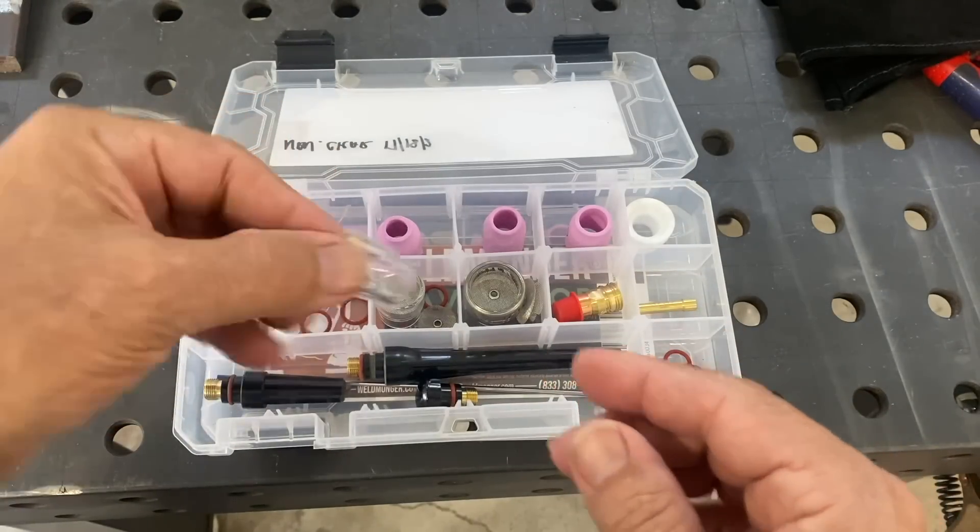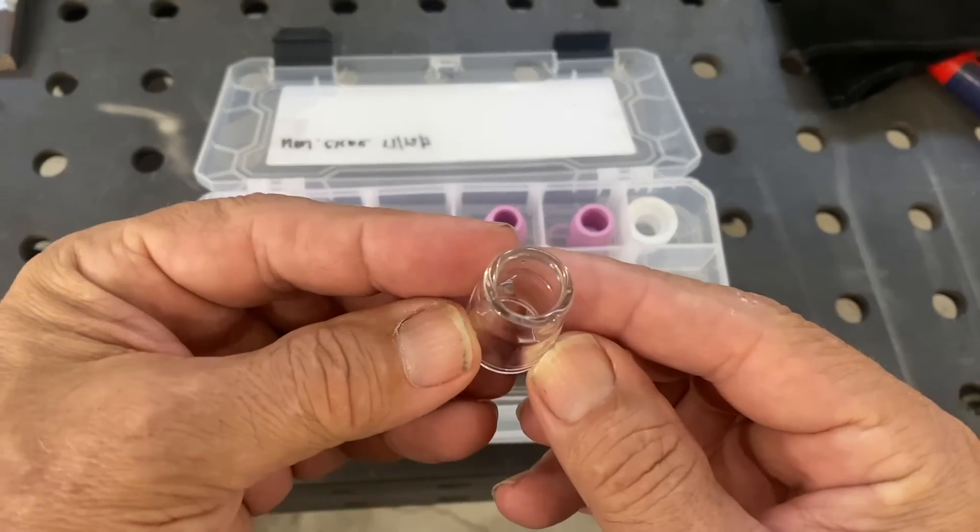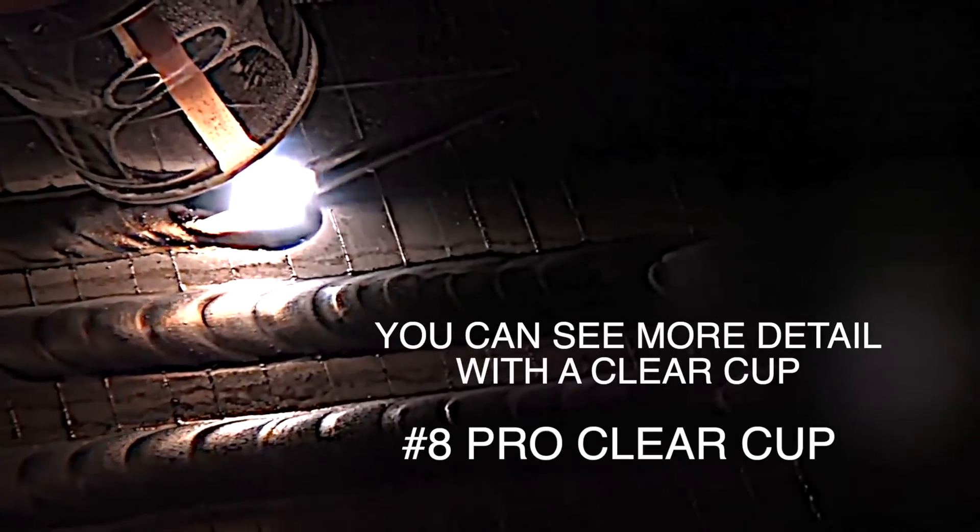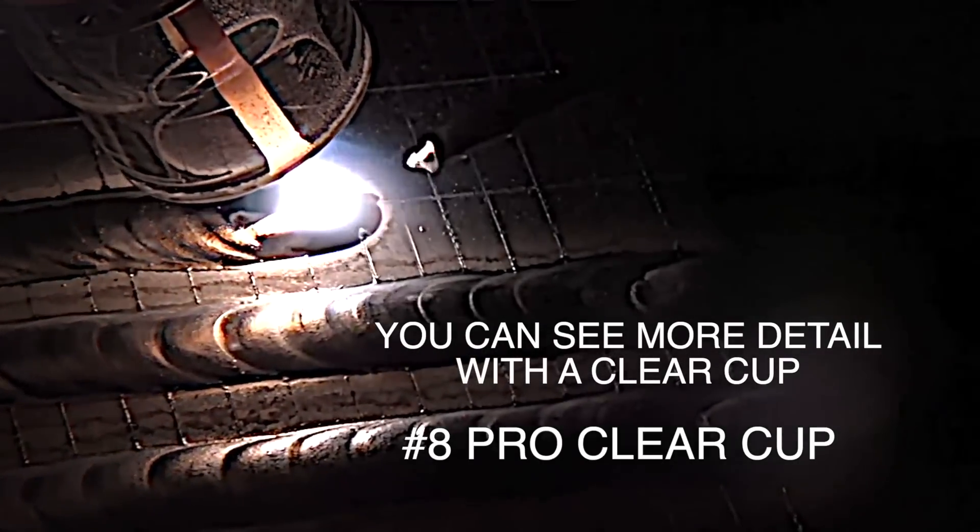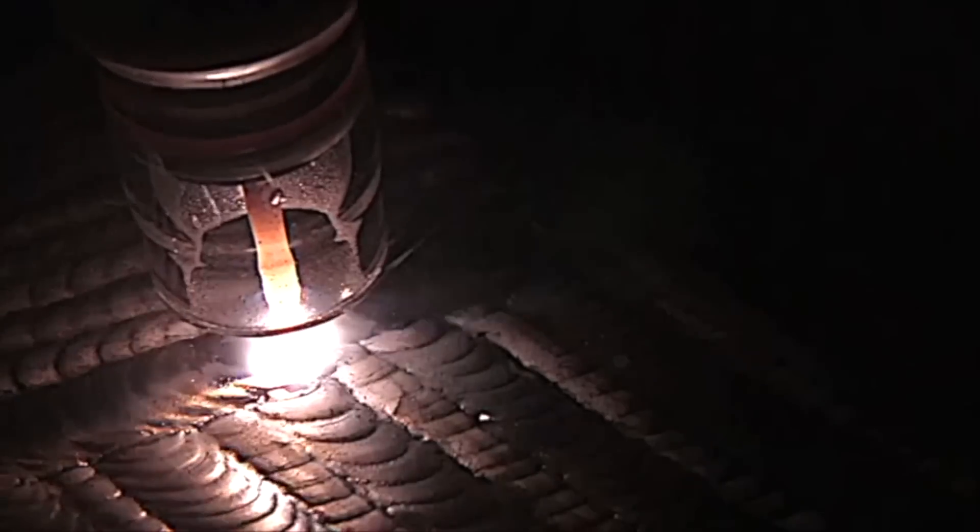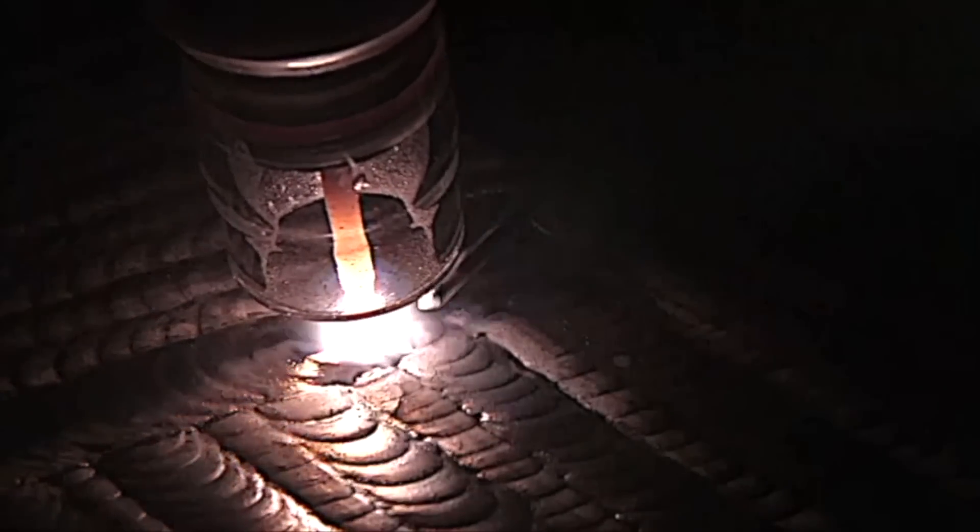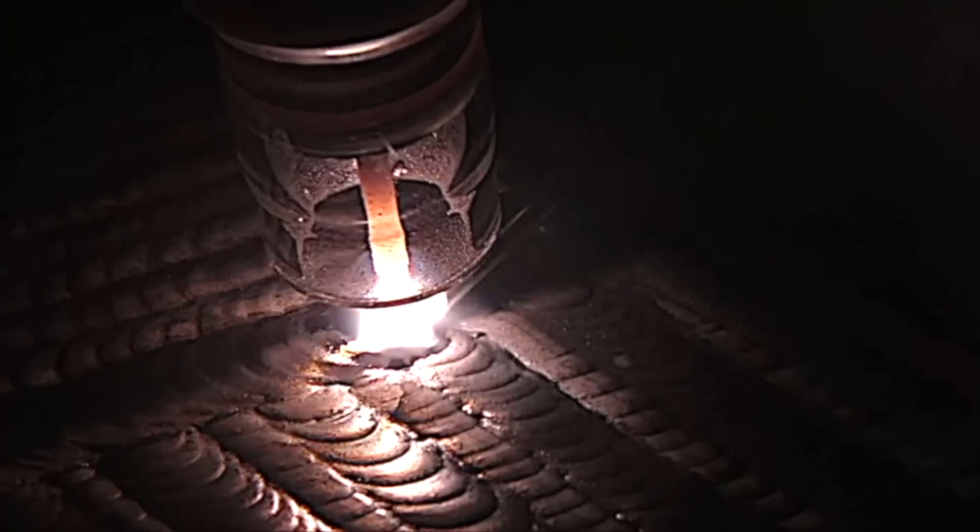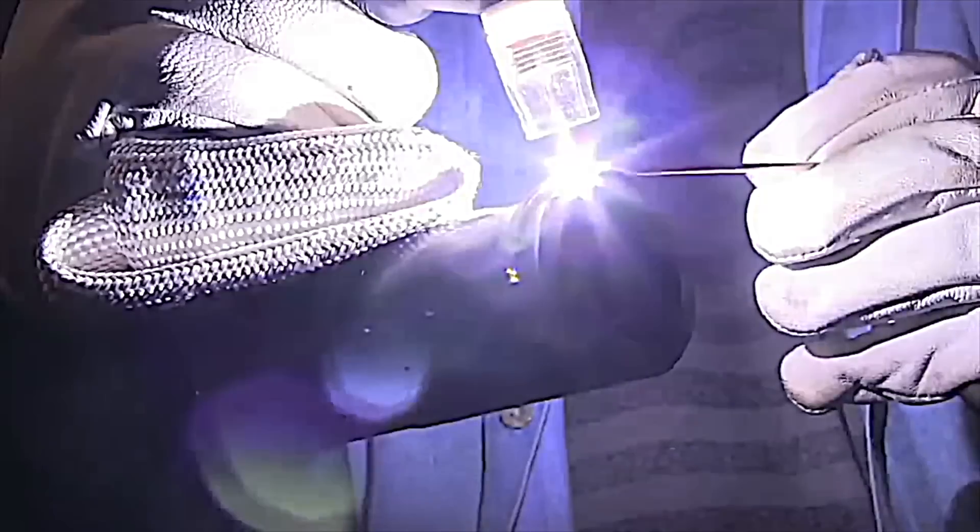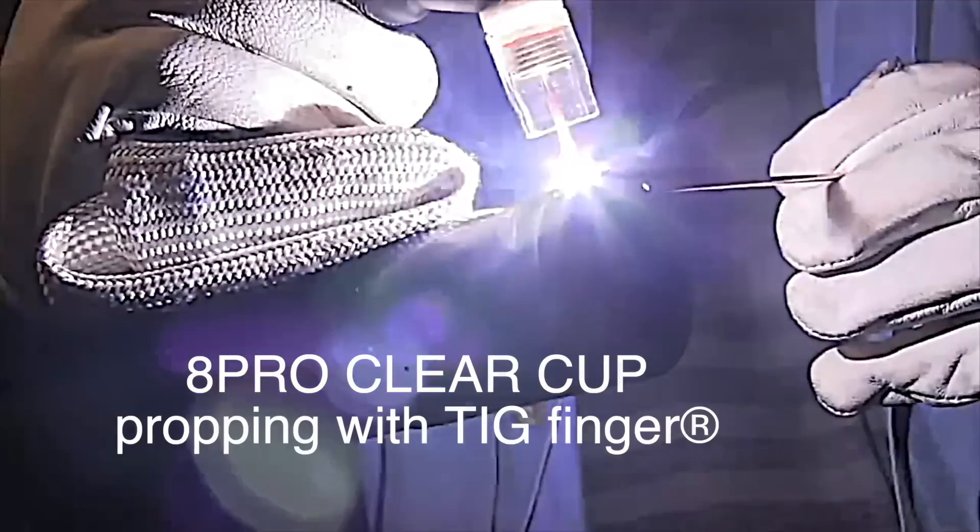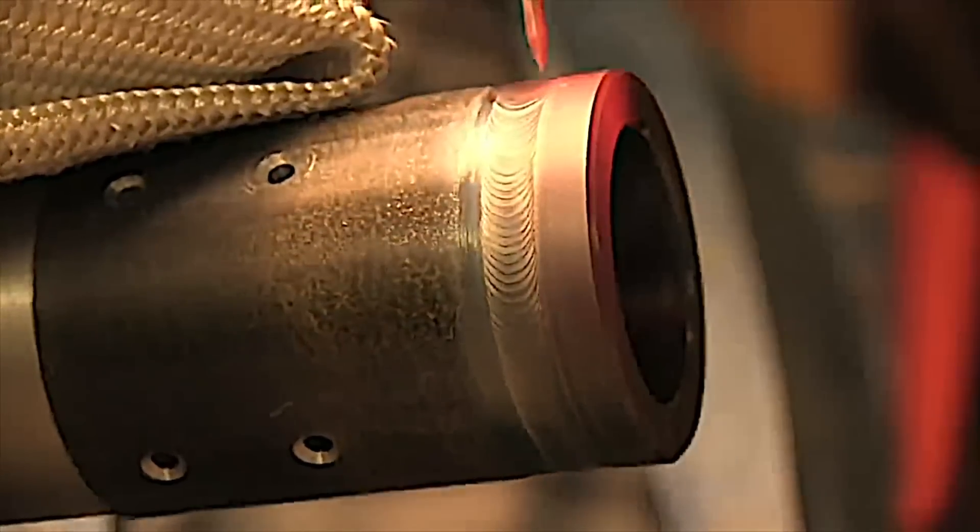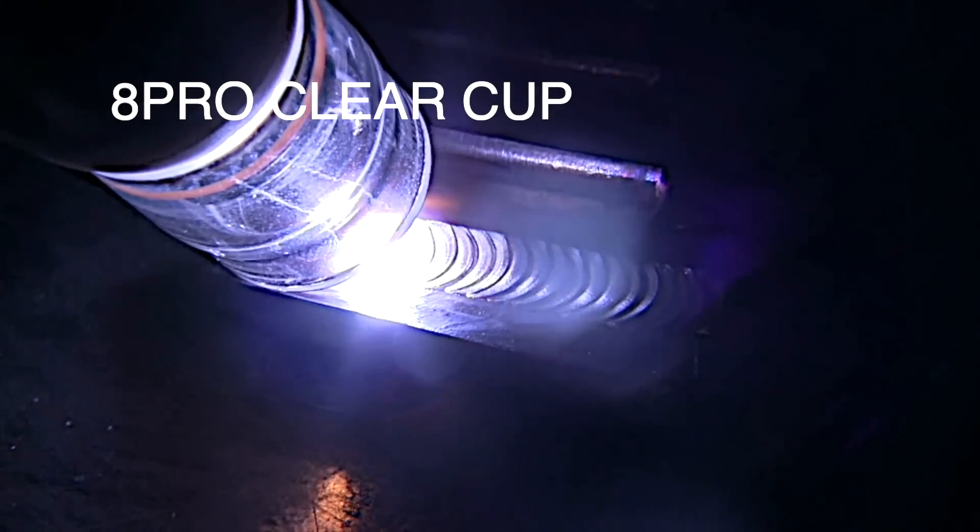Look at how this is lighting up that little scribe line that I'm trying to follow there. Then there is the number eight pro clear cup. Also a great cup for aluminum as well as stainless steels and carbon steels. If you've been watching my videos very long at all, you know I'm a big advocate of welding aluminum just to get better all around at TIG welding anything, and that's because of the filler rod hand. You have to feed so much more filler with aluminum that it gets that filler rod hand up to speed quickly. And then when you go back to welding steel or stainless steel, it's just much easier.